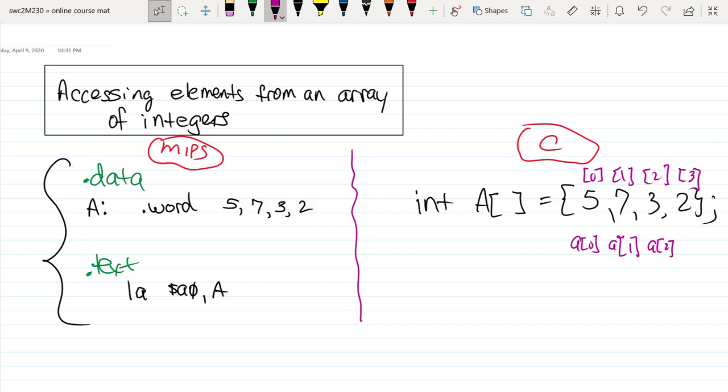So let's look at how we can write MIPS assembly code to work with arrays, essentially to either extract array elements or to insert elements into an array.